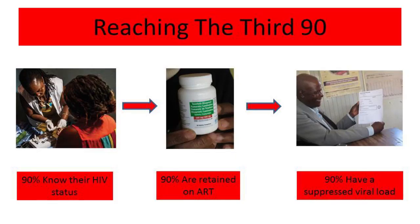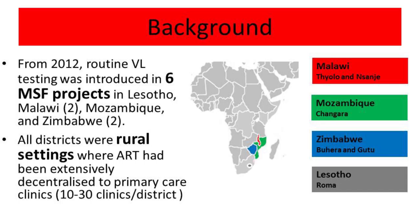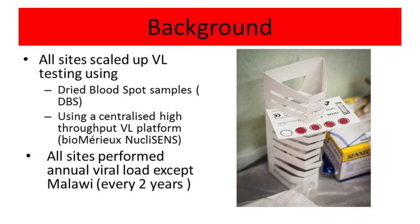The UN set targets for reaching 90-90-90 by the year 2020. The first 90 was to ensure that 90% of people living with HIV know their status. The second was that 90% of those be retained on antiretroviral therapy. And finally, 90% of people on ARVs have a suppressed viral load. Yet four years before those targets, global viral load coverage was less than 30%, and in Malawi and Zimbabwe specifically, coverage was only 17% and 5% respectively.